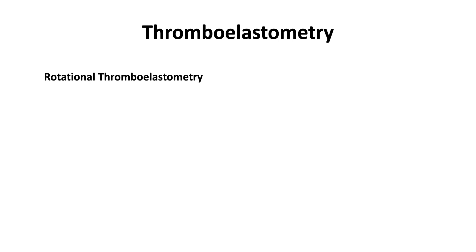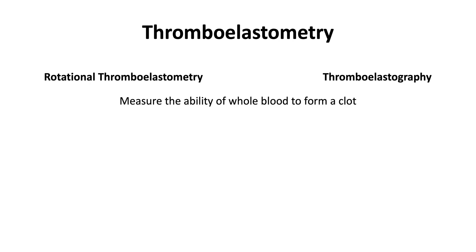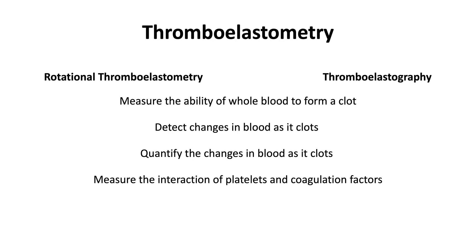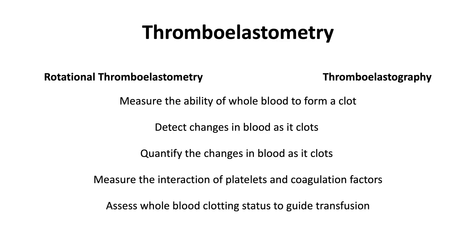The Rotem device is like the TEG device in that they both measure the ability of whole blood to clot. They detect changes in whole blood as it clots and quantify amplitude changes as a function of time. They both measure the interaction of platelets and coagulation factors, especially fibrinogen, and they assess whole blood clotting status to guide transfusion.